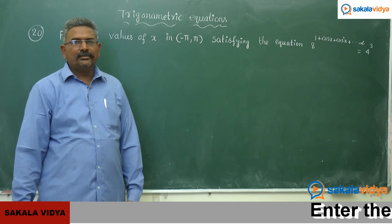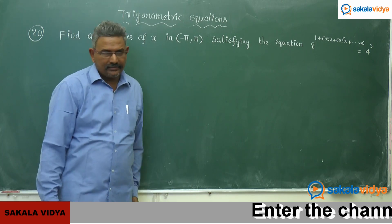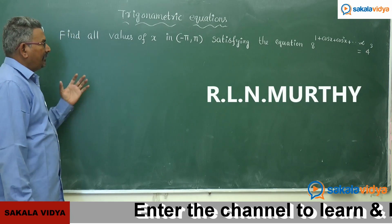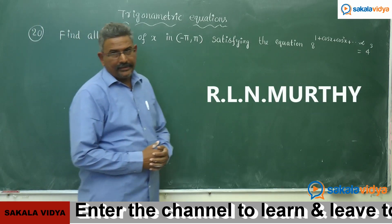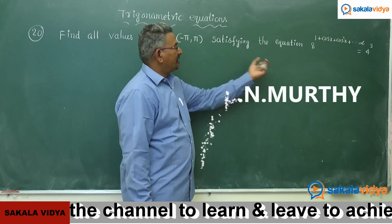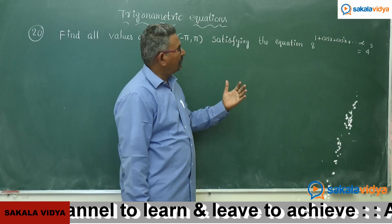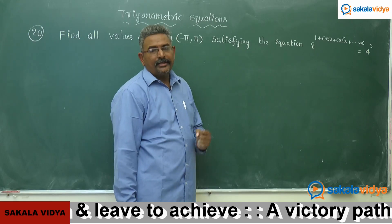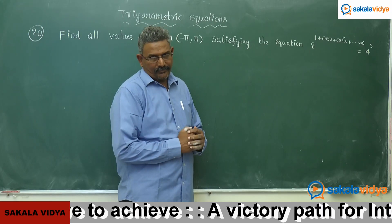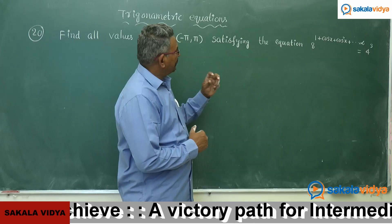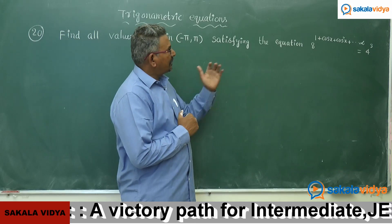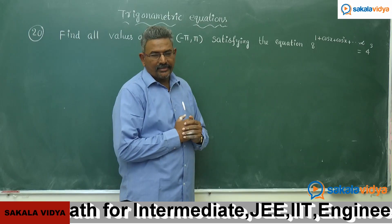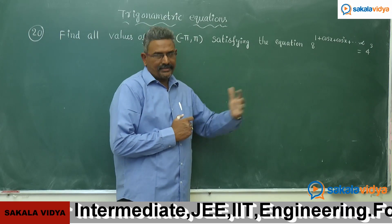Let us solve one more interesting question. Find all values of x in the interval minus pi to pi, satisfying the equation 8 to the power of 1 plus cos x plus cos squared x and so on to infinity, equals 4 cubed. Here, 1 plus cos x plus cos squared x up to infinity is an infinite series.